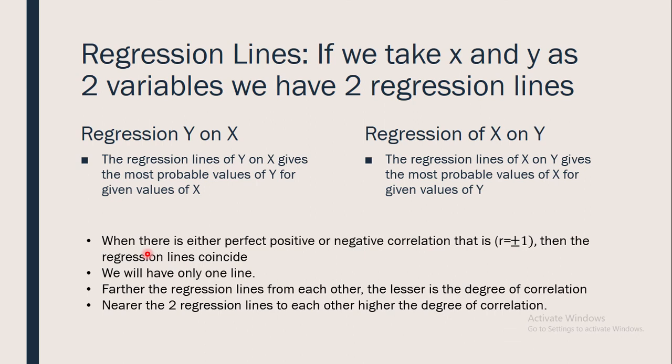There are certain interpretations we should know. When there is either perfect positive or perfect negative correlation — that is, when the correlation coefficient r equals +1 or -1 — the two regression lines coincide, meaning we have only one line, indicating that x and y are perfectly correlated.